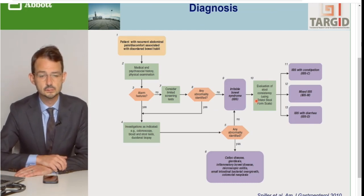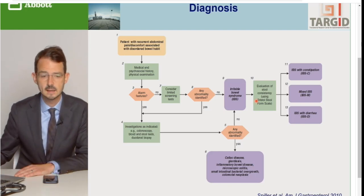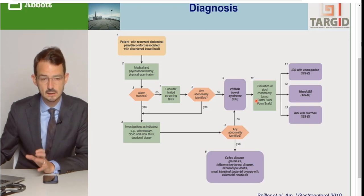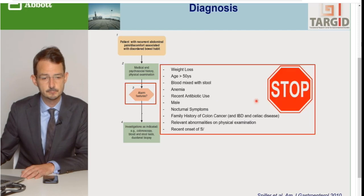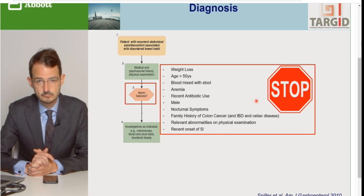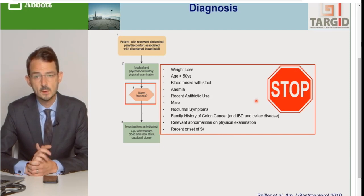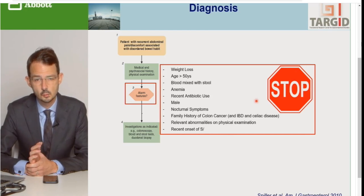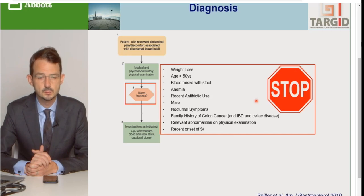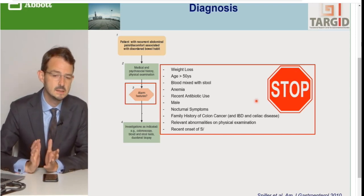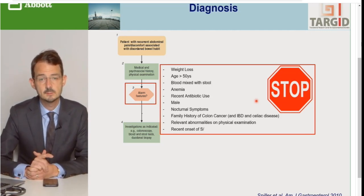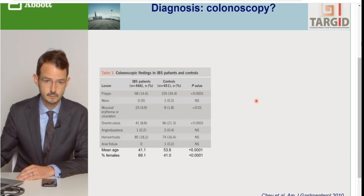Đây là lưu đồ được lấy từ Rome, vẫn còn đúng trong Rome 4. Chúng ta bắt đầu từ hỏi bệnh sử rồi sau đó kiểm tra xem có các yếu tố cảnh báo nào hay không. Những đặc điểm cảnh báo đó cho chúng ta biết liệu bệnh nhân này có cần xét nghiệm chuyên sâu hơn, thí dụ như là soi ruột. Đây là những yếu tố cảnh báo quan trọng: sụt cân, bệnh nhân khởi phát triệu chứng sau 50 tuổi, mất máu, thiếu máu, phân có máu, hoặc là bệnh nhân thức dậy ban đêm vì triệu chứng. Và đặc biệt là đàn ông cũng được xem là yếu tố cảnh báo quan trọng, cũng như tiền căn gia đình có bệnh lý ruột viêm, ung thư, hoặc bệnh celiac.